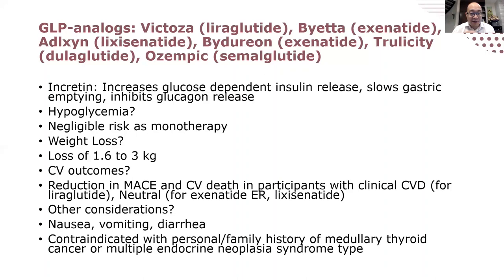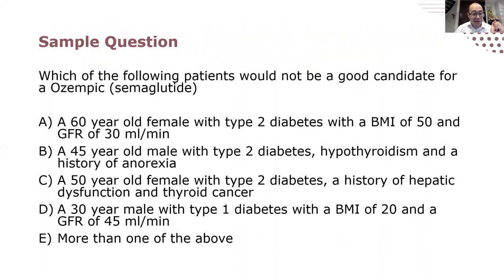Sample question on GLP-1 analogues: A and B are correct; C and D are wrong. D is incorrect because you can't use GLP-1s in people with type 1 diabetes. C is incorrect because of the thyroid cancer contraindication. Anorexia and hypothyroidism are not contraindications for Ozempic — it's just specific types of thyroid cancer. Obesity is definitely not a contraindication; in fact, you can use Ozempic at a BMI of 30 or more.